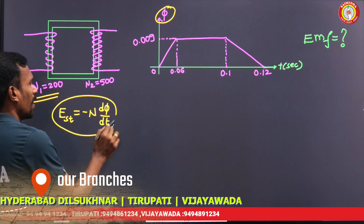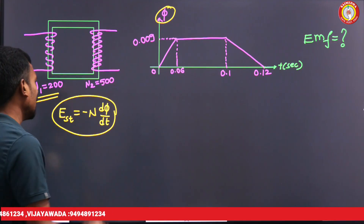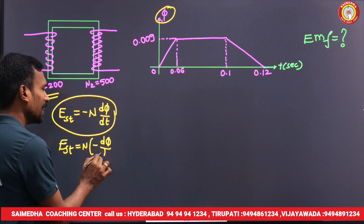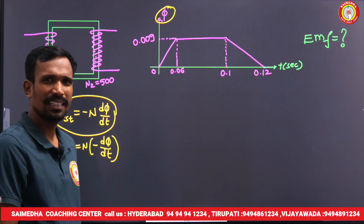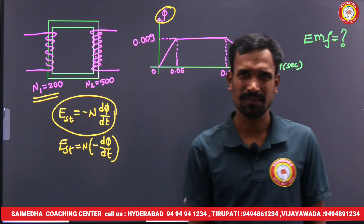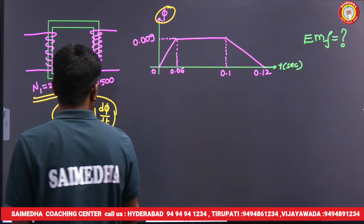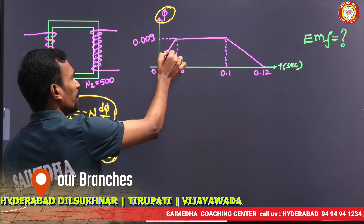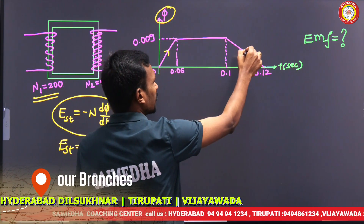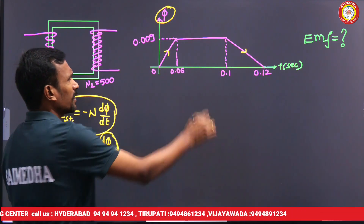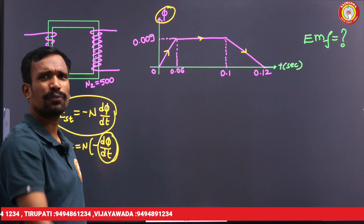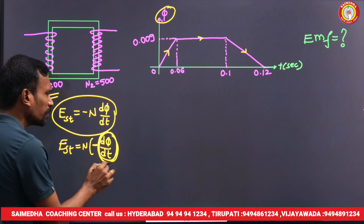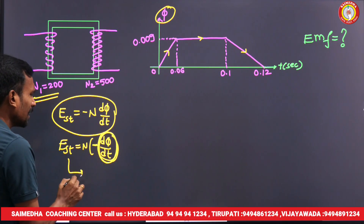This is already known: E = minus N into dΦ/dt. The rate of change of flux may be negative or positive. Here the rate of change of flux is positive. Here the rate of change of flux is negative. Here there is no rate of change of flux. If the rate of change of flux is positive, then positive into negative gives negative EMF.